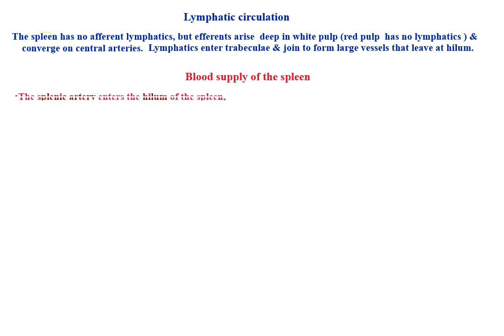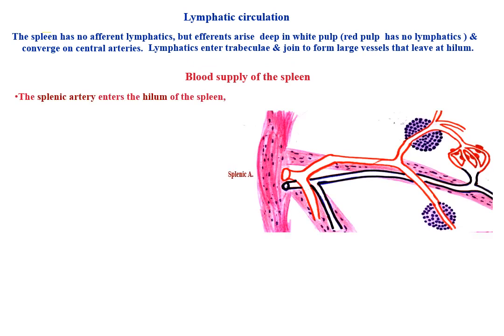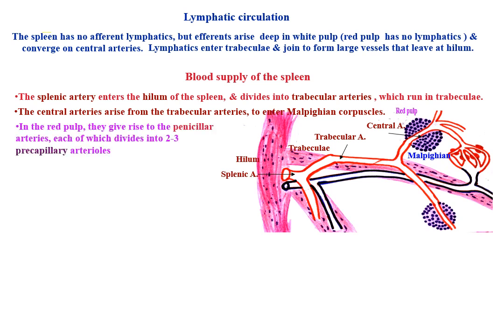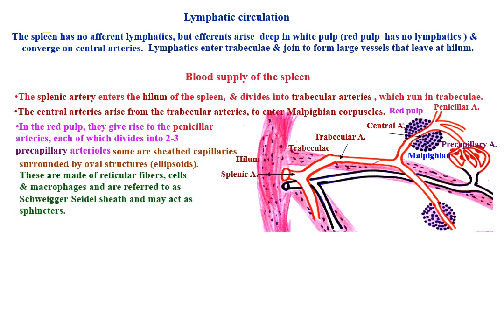Blood supply of the spleen. The splenic artery enters the hilum of the spleen and divides into trabecular arteries, which run in the trabeculae. The central arteries arise from the trabecular arteries to enter the malpighian corpuscles. In the red pulp, they give rise to penicillar arteries, each of which divides into two to three pre-capillary arterioles. Some are sheathed capillaries surrounded by oval structures called ellipsoids.